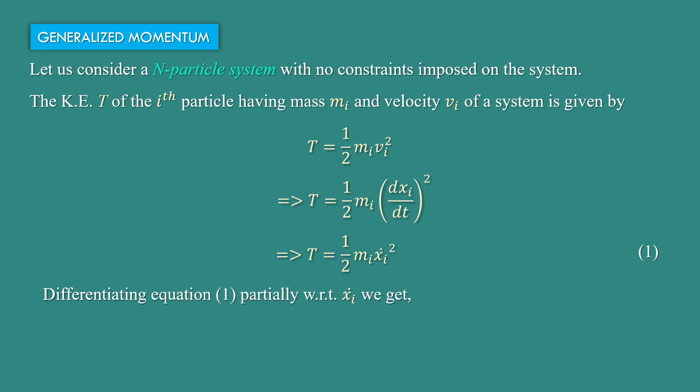Differentiating equation 1 partially with respect to ẋᵢ, we get ∂T/∂ẋᵢ = ½Mᵢ × 2ẋᵢ = Mᵢẋᵢ. This is equation number 2.